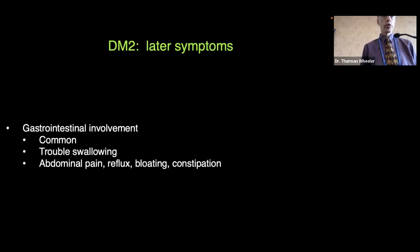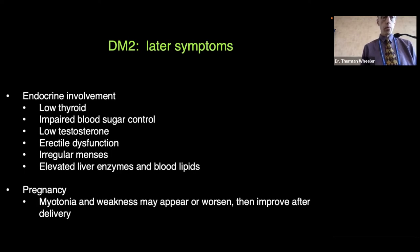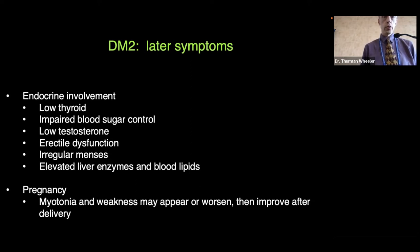Gastrointestinal involvement is fairly common. Symptoms to watch for include trouble swallowing, abdominal pain, reflux, bloating, and constipation. Diarrhea is less common. Endocrine involvement includes low thyroid, impaired blood sugar control, low testosterone levels, erectile dysfunction, irregular menses, elevated liver enzymes, and blood lipids like cholesterol and triglycerides.